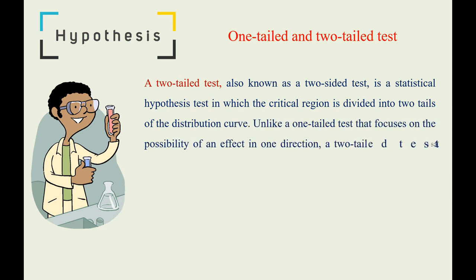Unlike a one-tailed test that focuses on the possibility of an effect in one direction, a two-tailed test assesses the significance of an effect in either direction from the specified value.